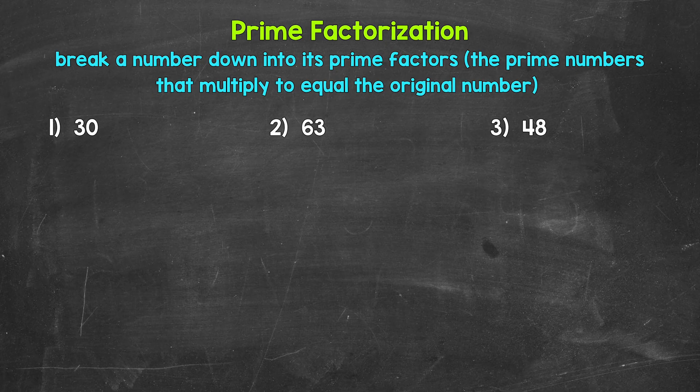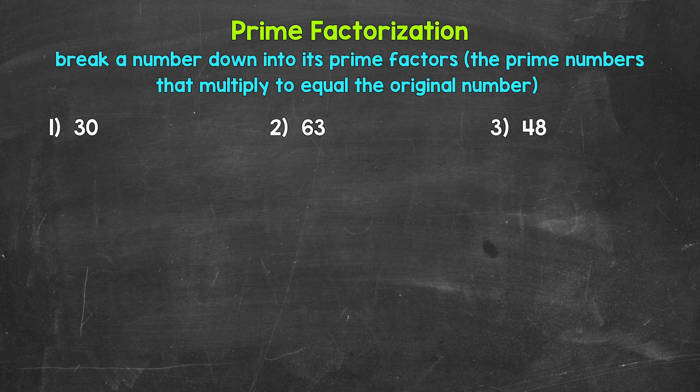30 is a composite number, meaning 30 has factors other than 1 and 30. So we can break this down into other factors, and we keep breaking this down until we have all prime numbers. The method we are going to use here is called a factor tree. To start this off, we need two factors of 30 — a factor pair — two numbers that multiply to equal 30, and we'll branch off of 30 with those.